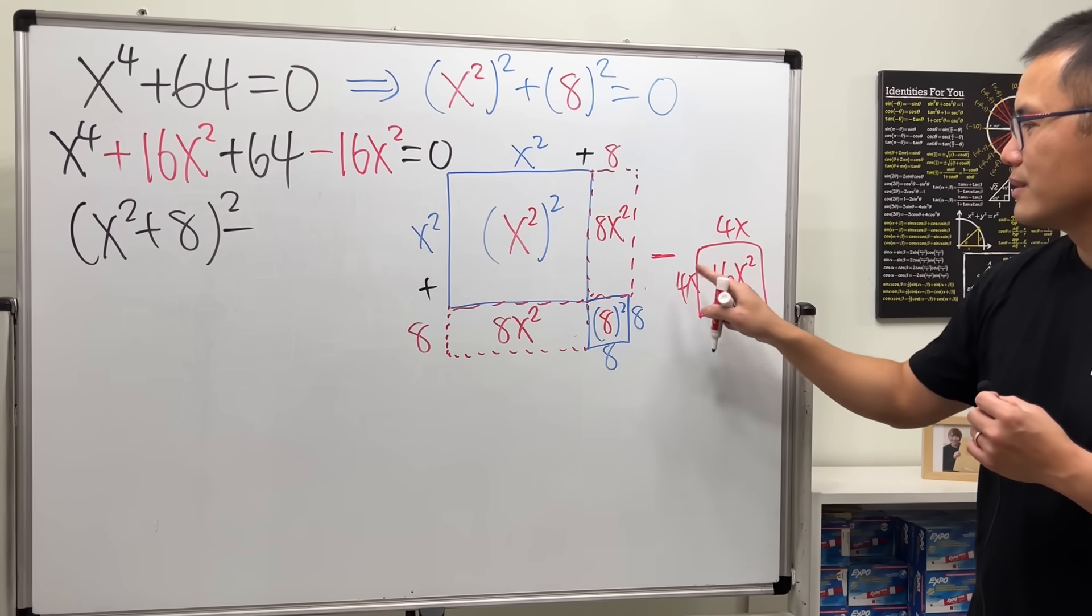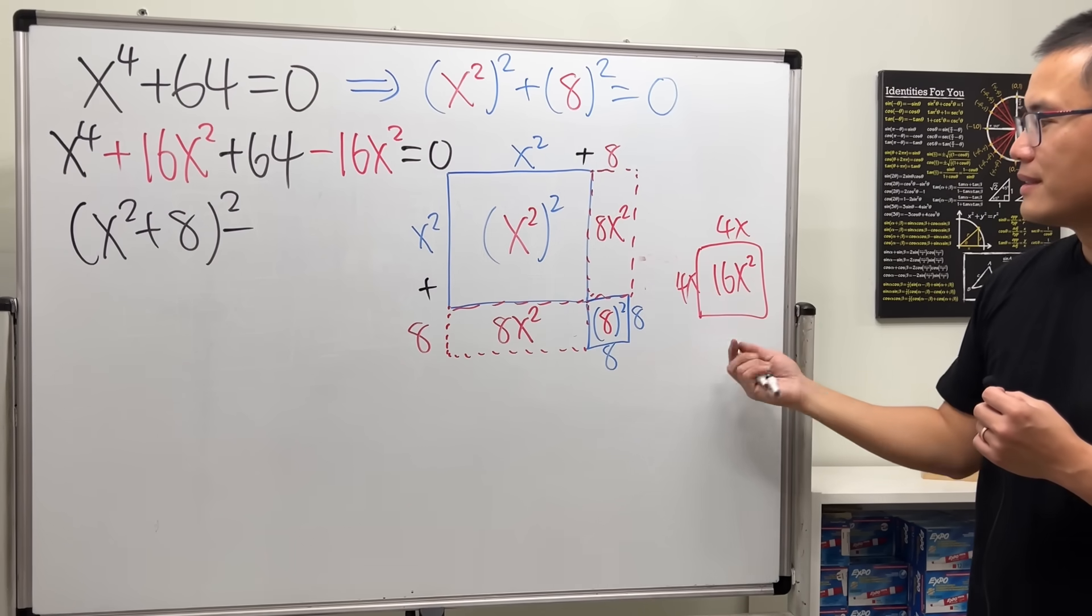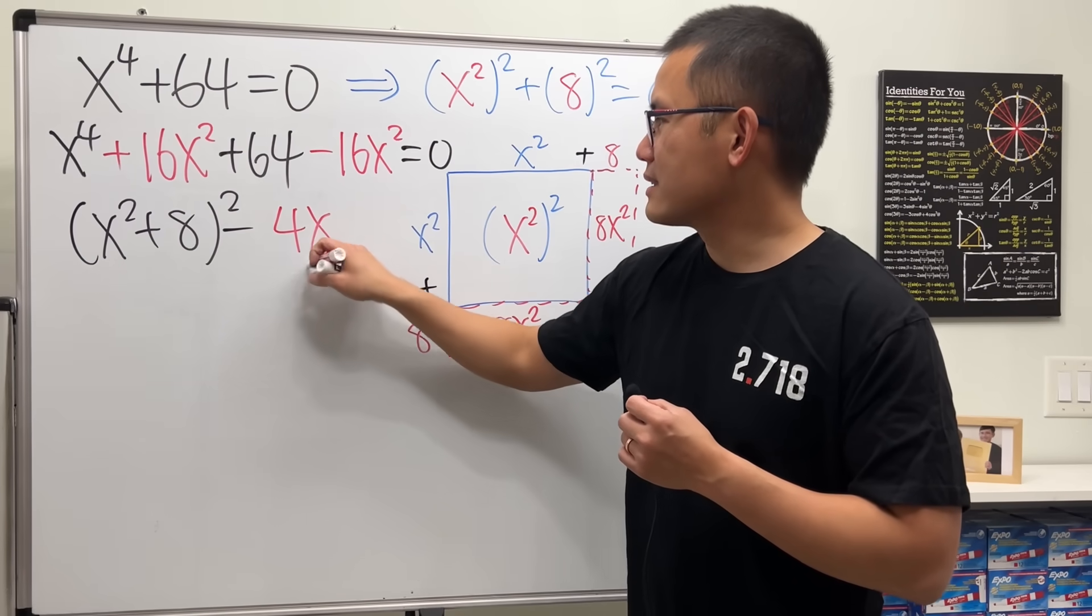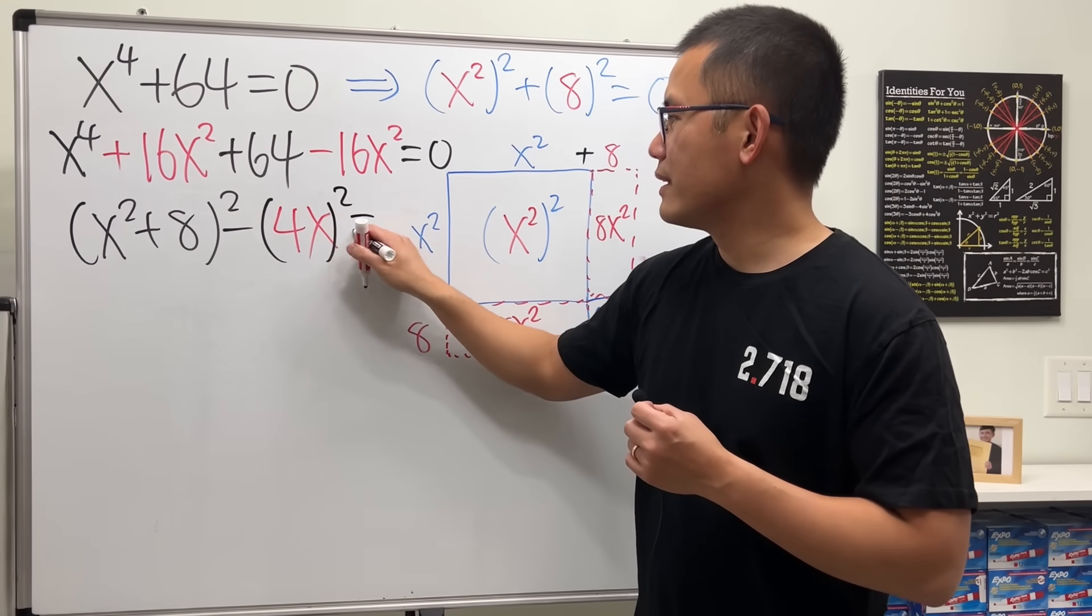So, that's the 4x and then squared. That's equal to 0.